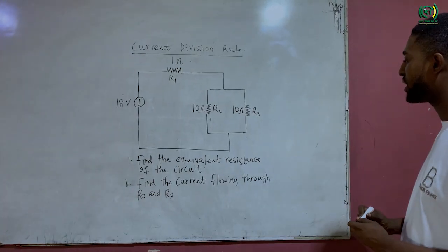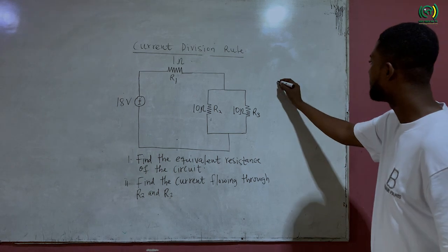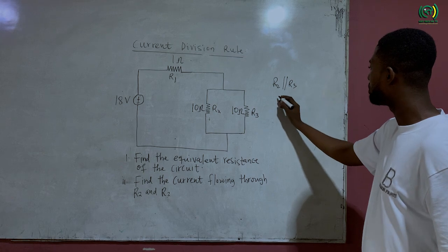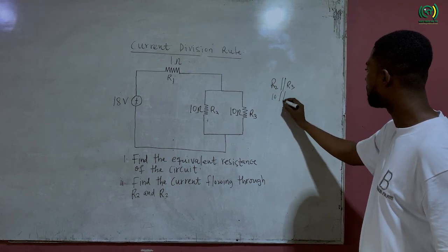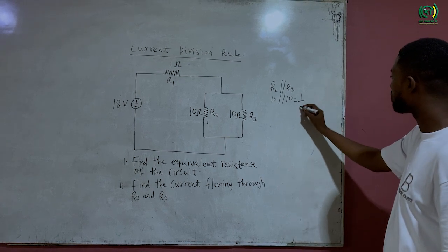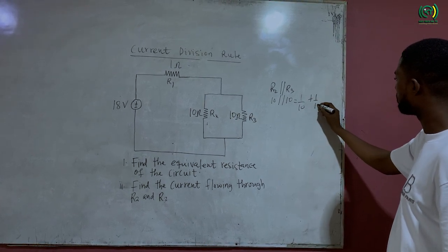So from here to find the equivalent resistance, we realize that R2 is in parallel with R3. So 10 ohm is in parallel with 10 ohm. And the equivalent resistance here will be 1 over 10 plus 1 over 10.